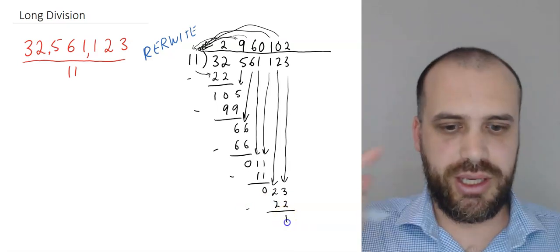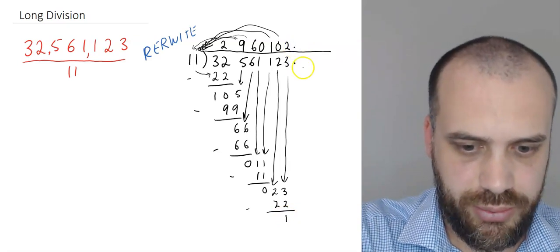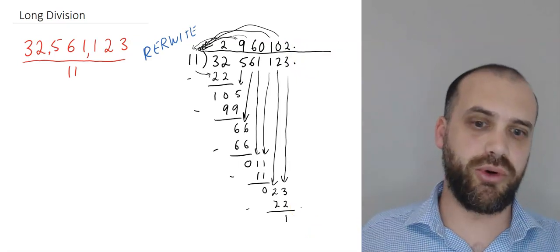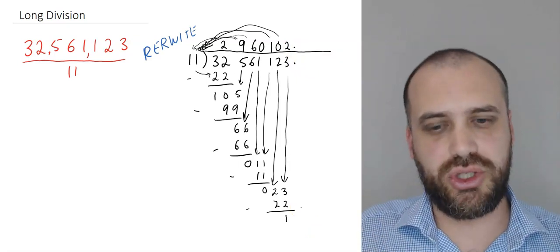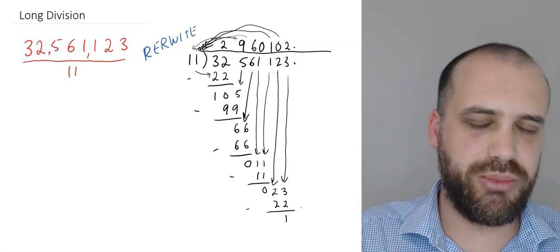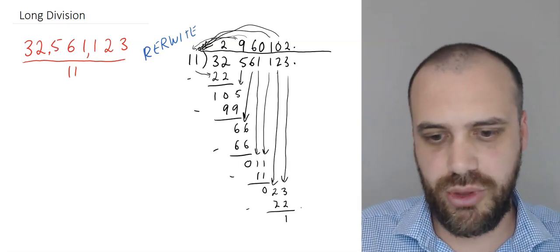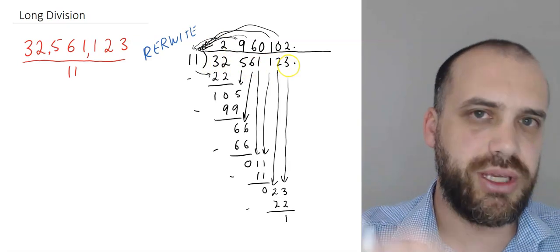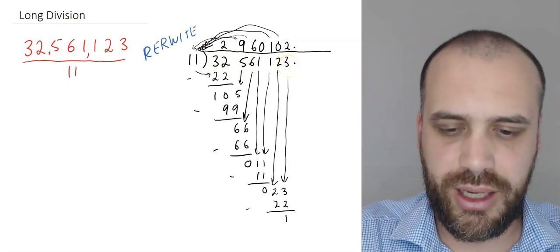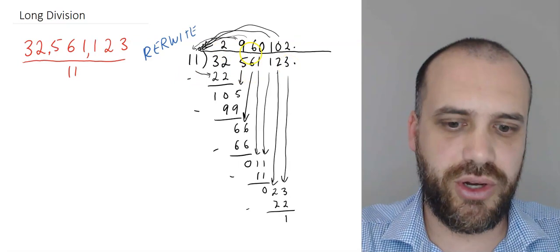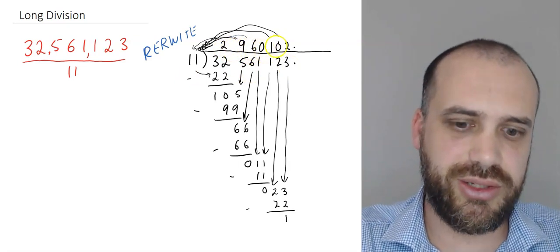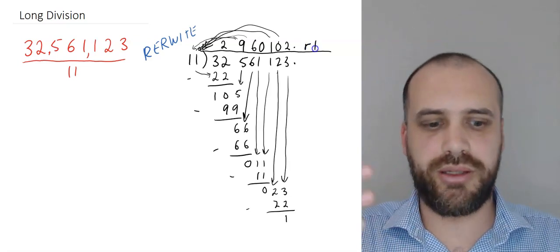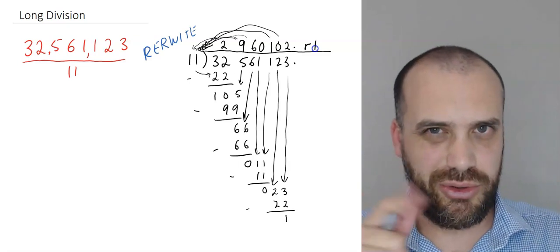Now, I could keep going here. I could go point, point, and drag a 0 down, and drag a 0 down, and drag a 0 down, and keep going and get more and more and more decimals. But you can also make the choice here to stop, and that's what we're going to do because that's the most useful thing for us moving forward. We're going to say 32,561,123 divided by 11 is equal to 2,960,102, remainder 1 with 1 left over. That is long division.